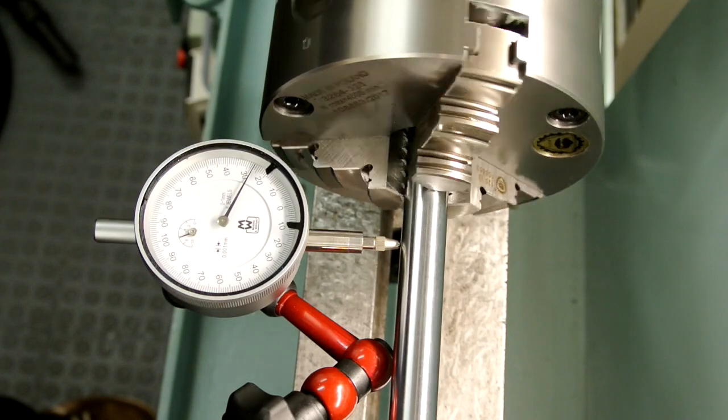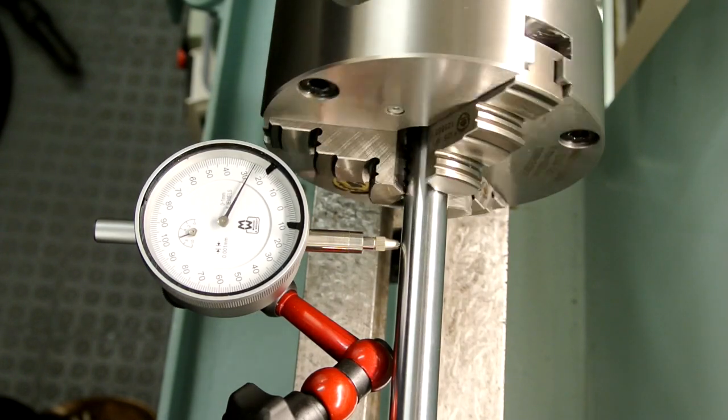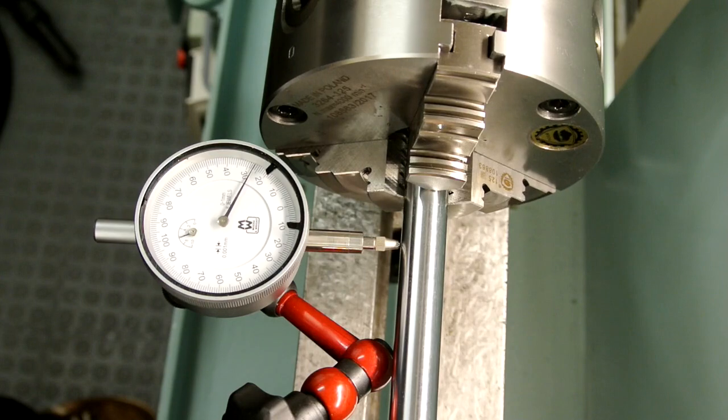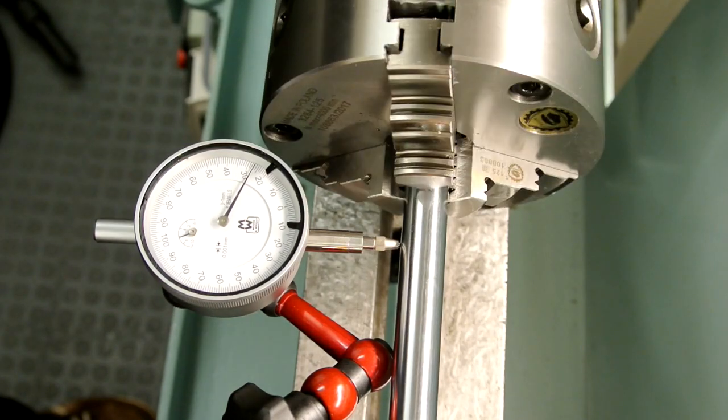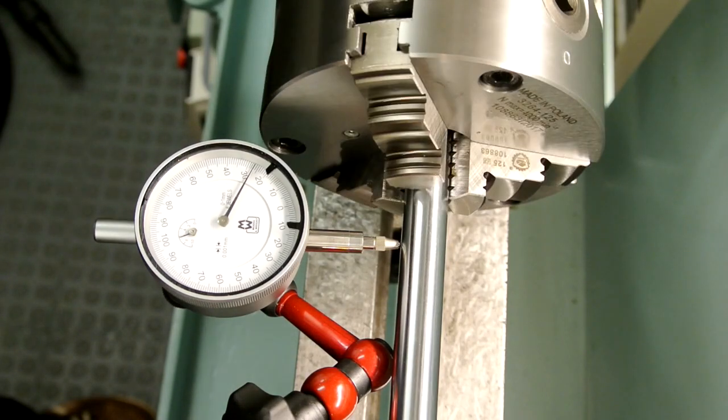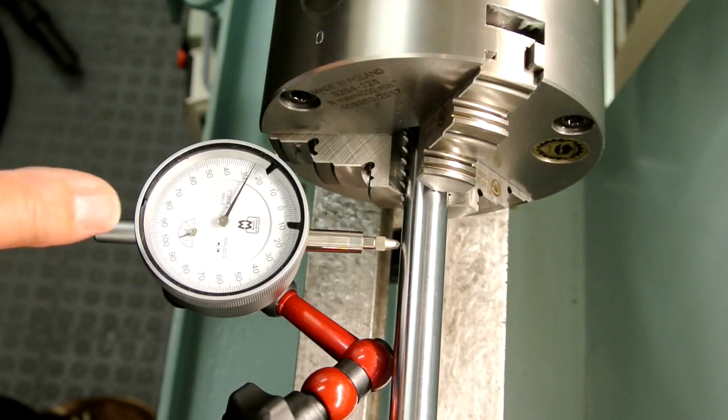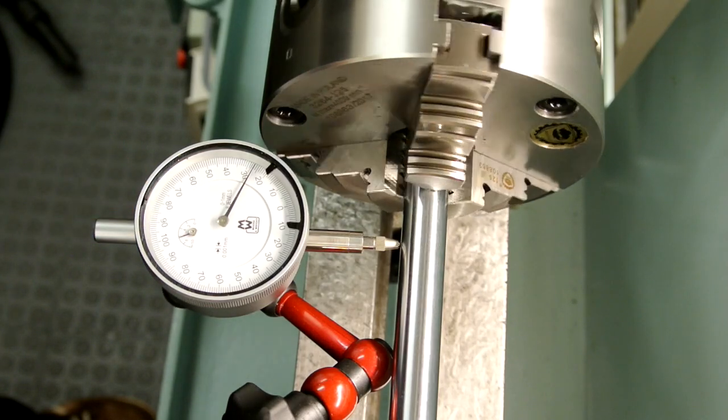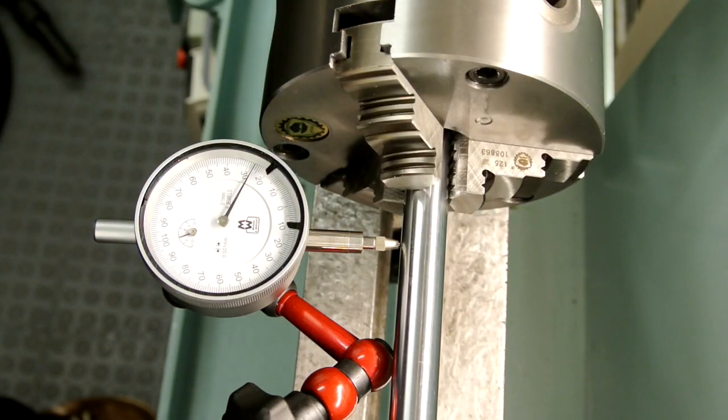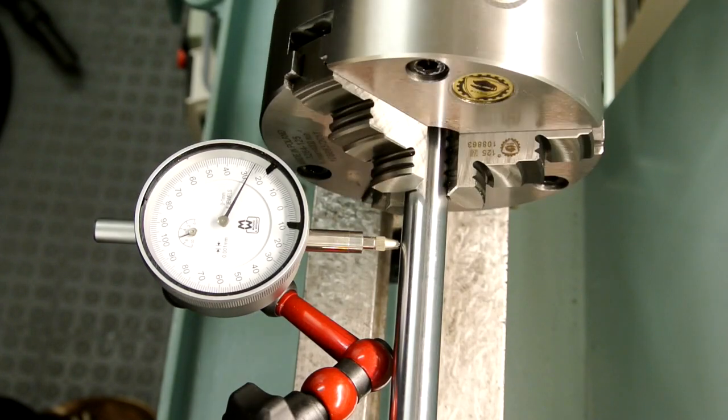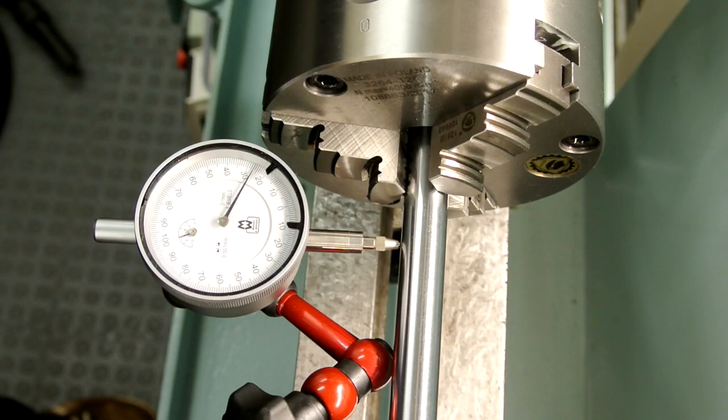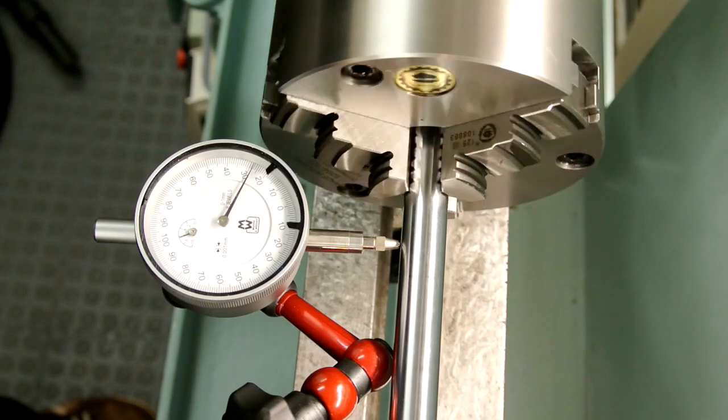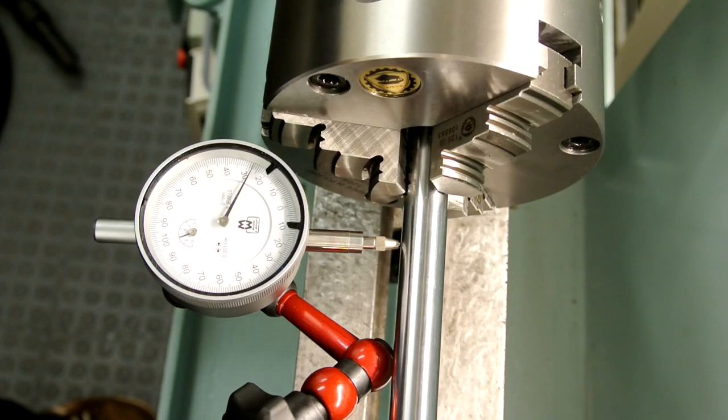Really difficult to see the needle making any movement at all. It's quite extraordinary. You can see that the dial indicator is registering absolutely no movement at all, so that's better than 0.001 of a millimeter.